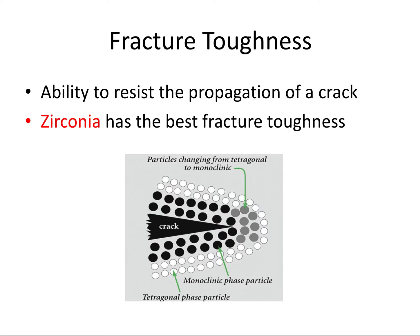Our next definition is fracture toughness, which refers to the ability of a material to resist the propagation of a crack. Zirconia has the best fracture toughness due to a characteristic called transformation toughening — tetragonal particles transform into a stronger monolithic form in response to cracks, preventing propagation. Zirconia is the strongest ceramic and the least likely to fracture, so if you see a question referencing crack propagation, they're hinting at zirconia.